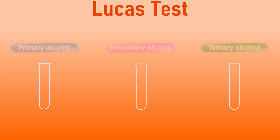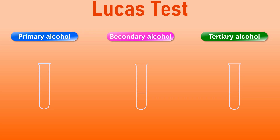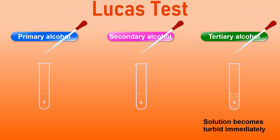Once again, here is how you perform the test. Place primary, secondary and tertiary alcohols in separate test tubes. Now add LUCAS reagent to each test tube. In the case of tertiary alcohols, the solution becomes turbid or cloudy immediately, as shown on the screen. Since the alkyl chlorides are immiscible liquids with alcohols, we observe this turbidity or cloudiness. In the case of secondary alcohols, the solution turns turbid after 2 to 3 minutes.